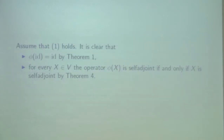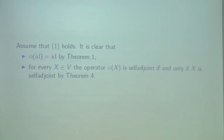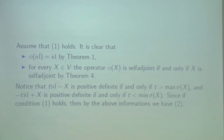The proof observes that if the first condition holds, it is clear by our characterization of phi that phi of the identity is the identity, and for every X, the operator phi is self-adjoint if and only if X is self-adjoint. So the consequence follows from property number 4.